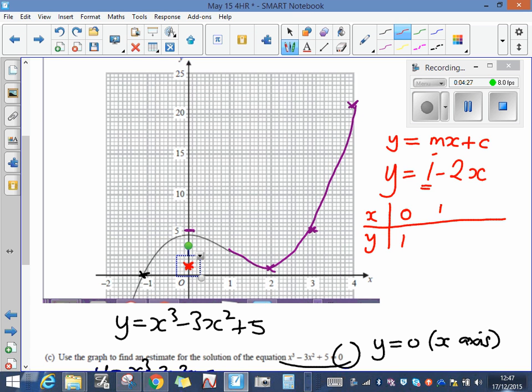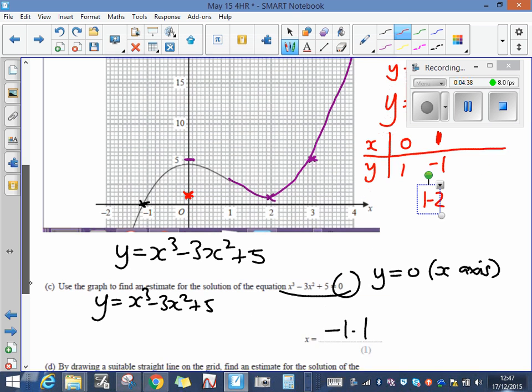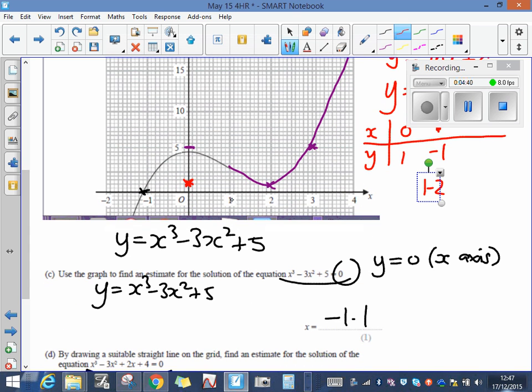Now I can either then use gradient or intercept. First of all, if x is 1, let's make a table of values. 1 take away 2 lots of 1, well 1 take away 2 is actually minus 1, so the graph also goes through 1, minus 1. Now 1, minus 1 is here.